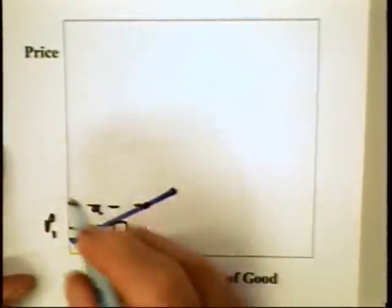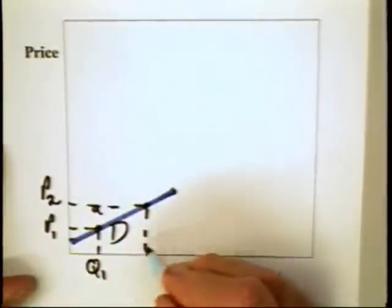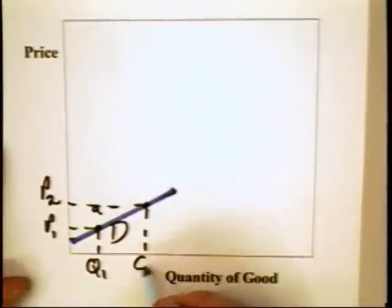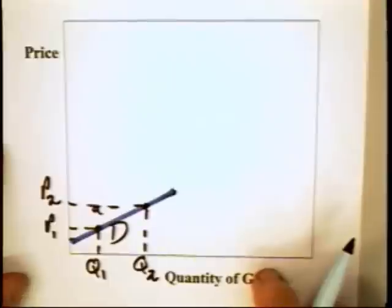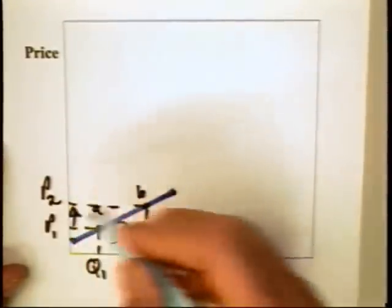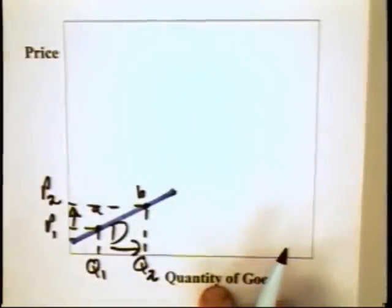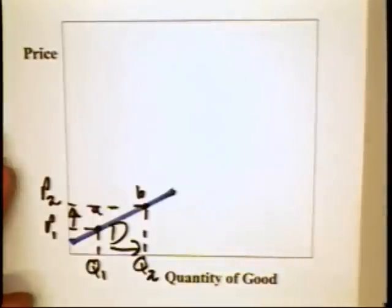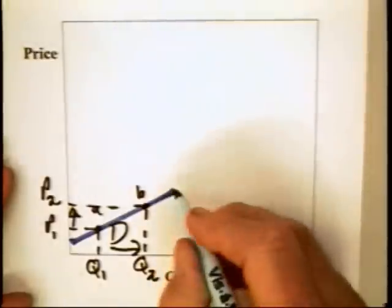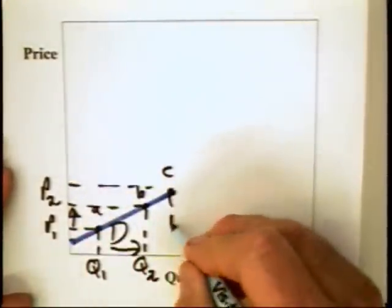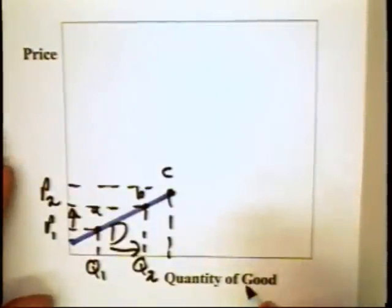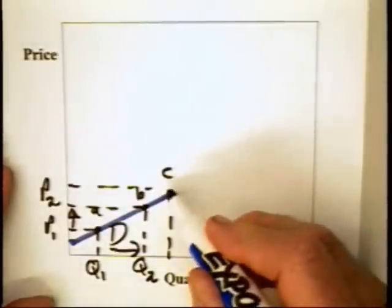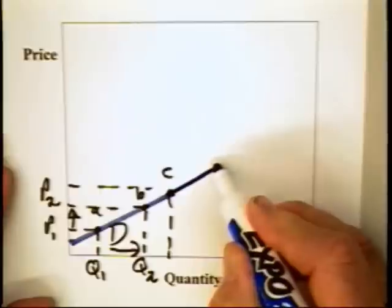You raise the price to P2, and people begin to see this good as a conspicuous consumption good. They get delight in impressing their friends, and as a consequence, the higher price leads to a greater quantity. Many people have argued that the demand for Mercedes-Benz is something like that. That is, Mercedes-Benz can raise its price and sell more simply because of the prestige factor associated with the higher price. Now, there is a problem with this because we can imagine going to a point like C, where a higher price leads to more being bought. But if we continue to raise the price, we have got to doubt that the quantity demanded is going to continue to rise.